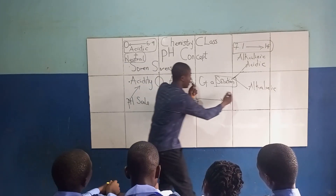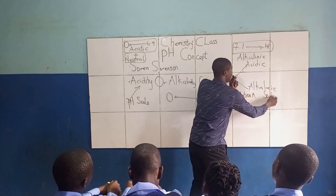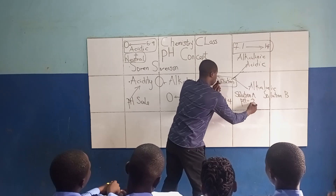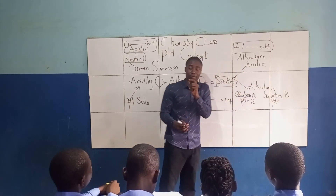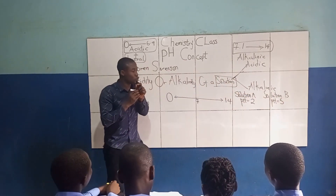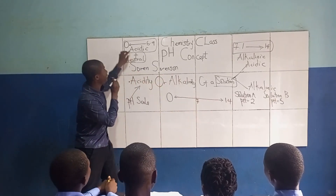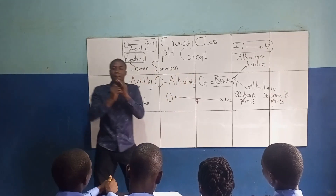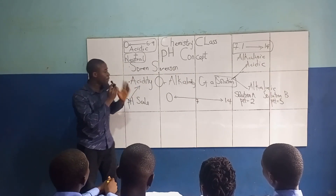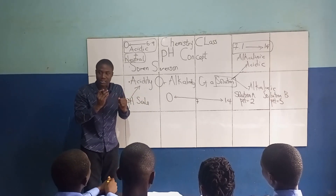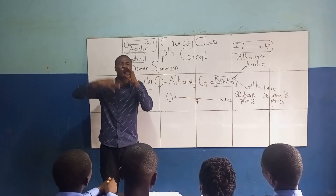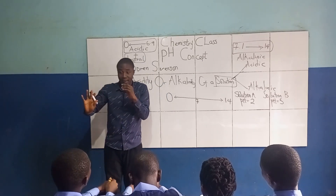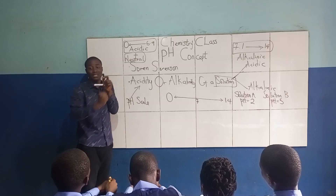Let's take two examples. Solution A has a pH value of 2, and Solution B has a pH value of 5. Both are acidic since both fall in the range of 0 to 6.9. But which is more acidic? As you go towards zero, acidity increases; as you go towards 14, alkalinity increases.